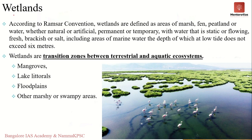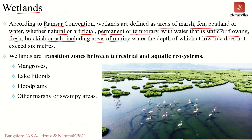Wetlands are basically swampy or marshy land subjected to permanent or temporary flooding by water. According to the Ramsar Convention, which is a very important convention regarding wetlands, these are defined as areas of marsh, fen, peatland or water, whether natural or artificial, permanent or temporary, with water that is static or flowing, fresh, brackish or salt, including areas of marine water.